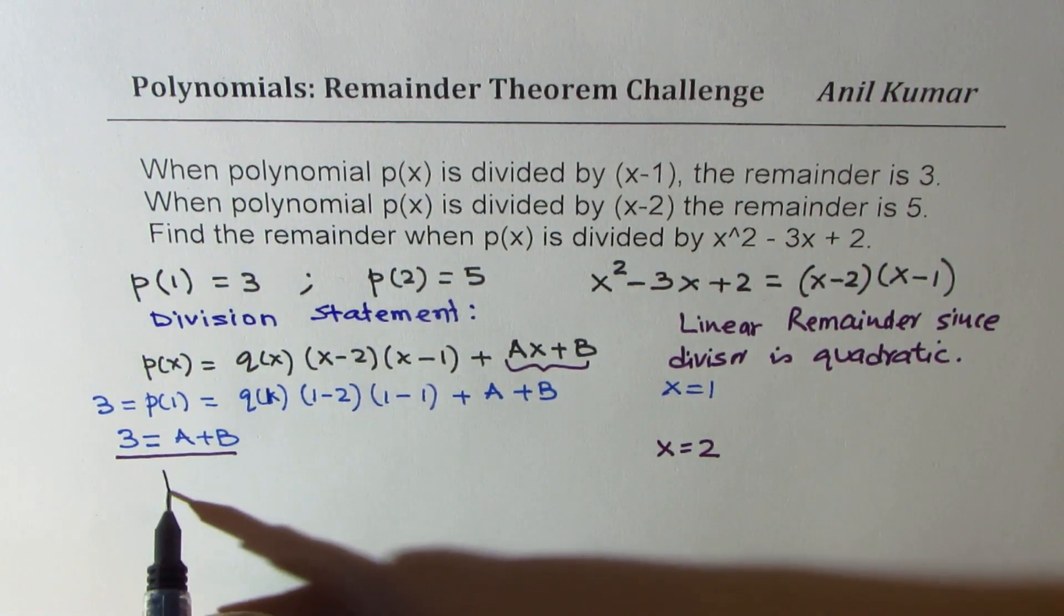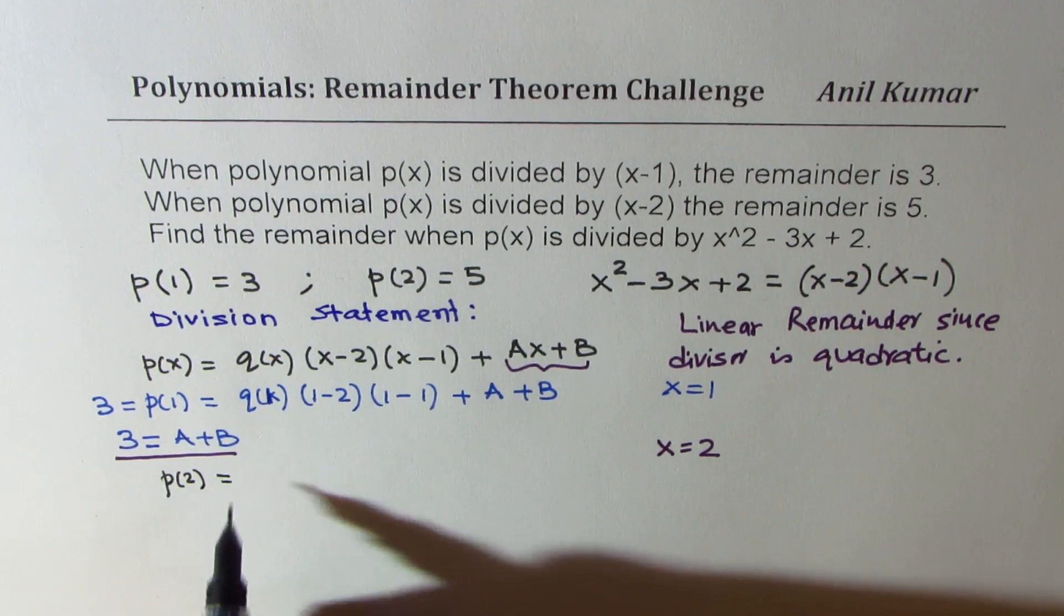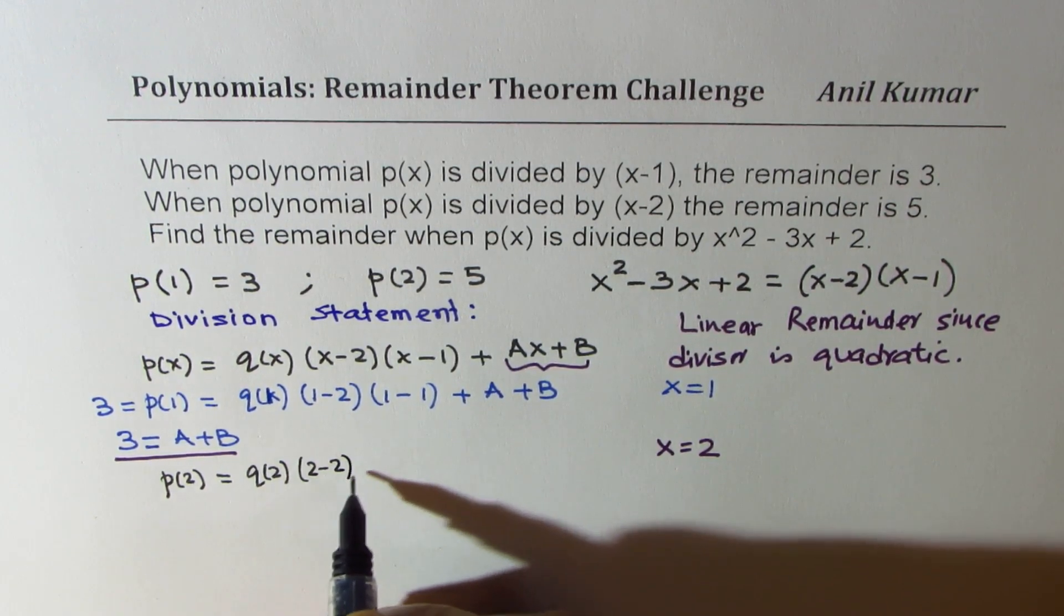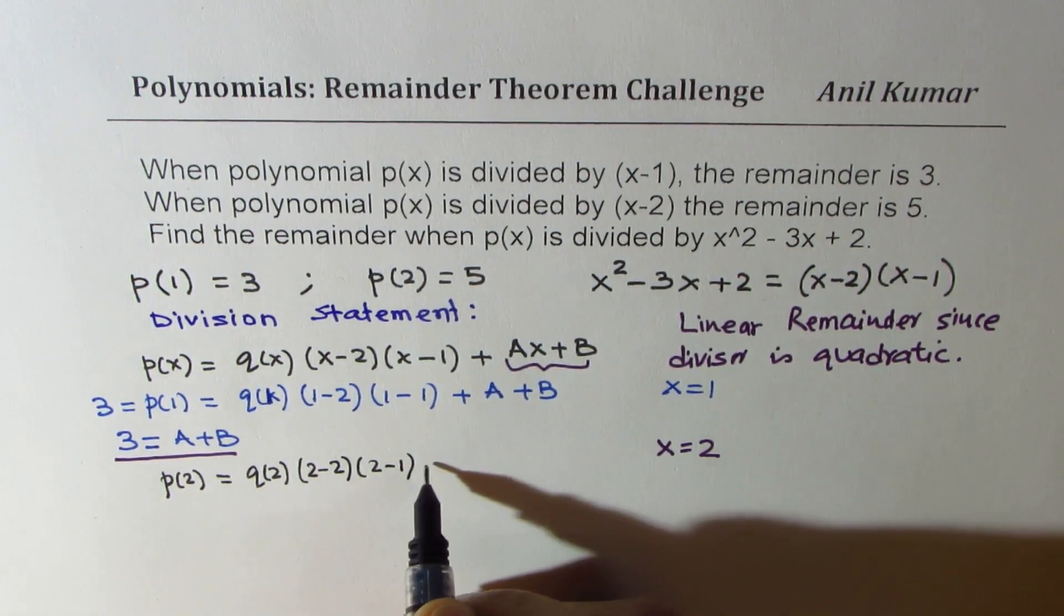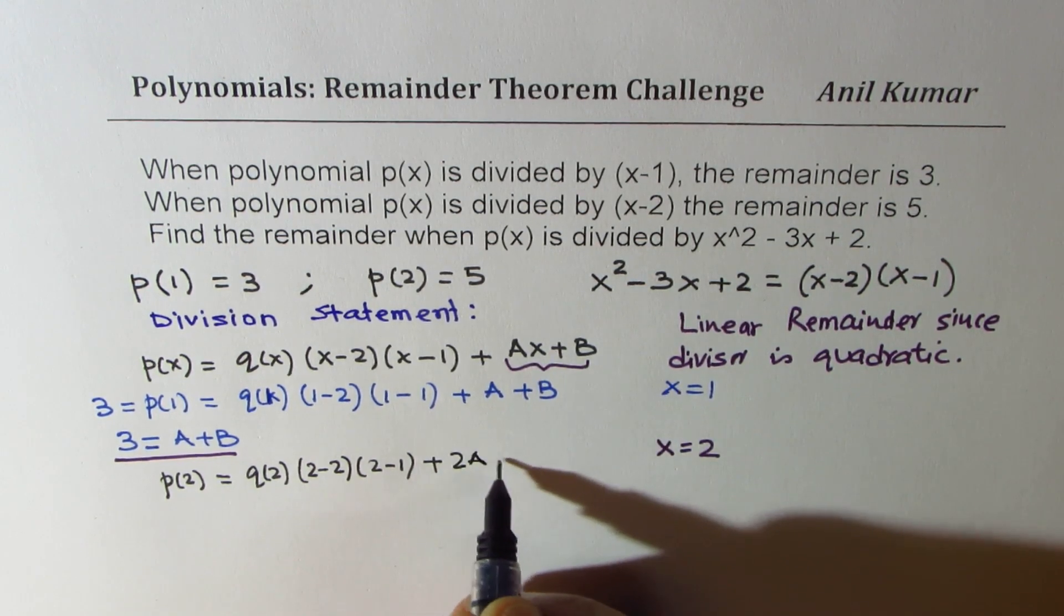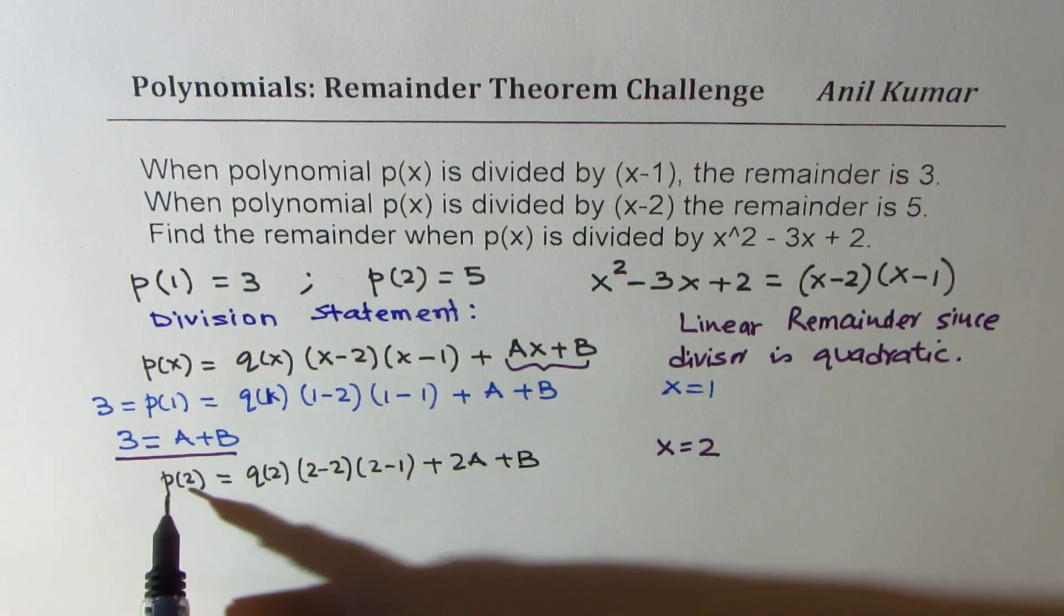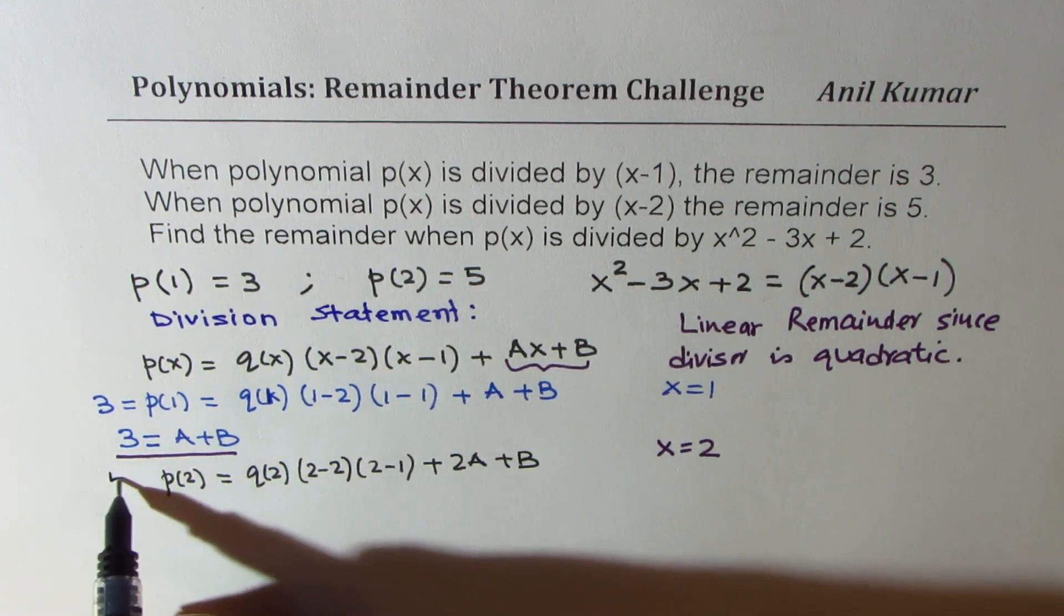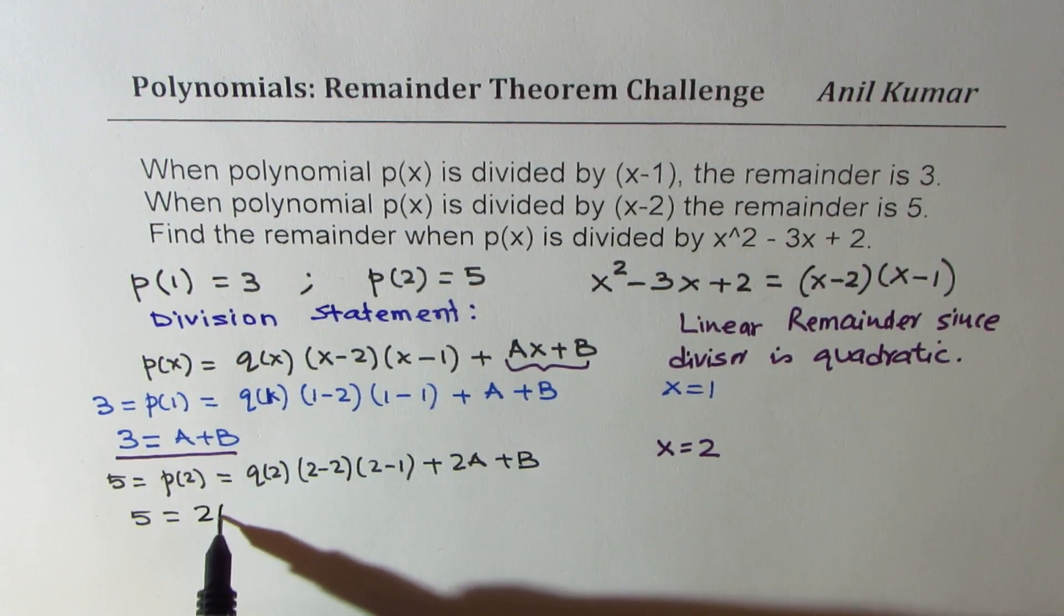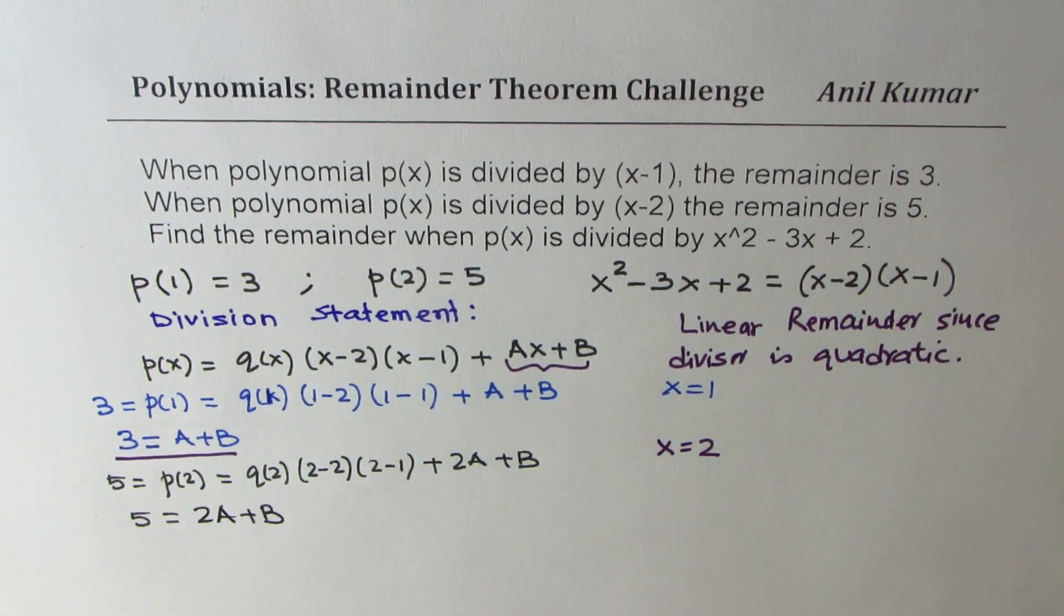Then we get p(2) as equal to the quotient where x is 2, (2-2)(2-1) + 2A + B. And p(2) is 5, so we get our equation 5 = 2A + B. Is that clear?